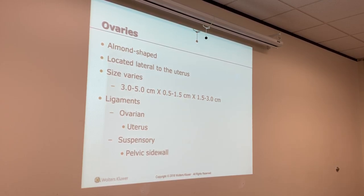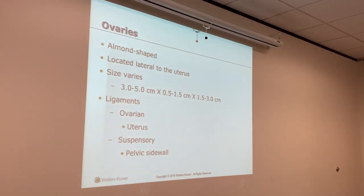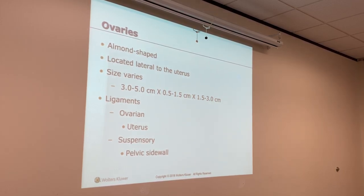The ligaments that hold the ovaries in place: the medial ovary has the ovarian ligament, which connects the ovary to the lateral uterus. Then you have the suspensory ligament, which is the lateral ovary to the lateral sidewall. These are not covered by the broad ligament — they are only attached to the posterior side of the broad ligament. So only the anterior ovary is protected by the broad ligament; the posterior ovary is out in the adnexa.